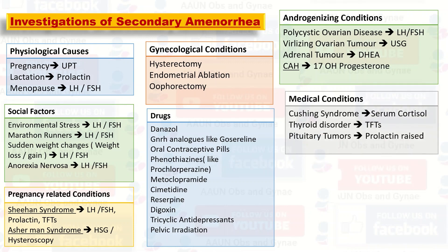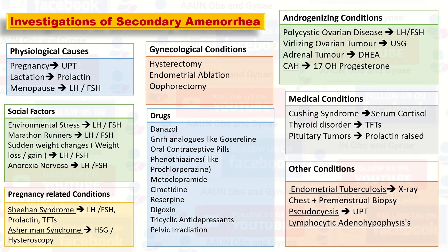Among the medical conditions: for Cushing's syndrome, we do serum cortisol. For thyroid disorders, we do TFTs. For pituitary tumor, prolactin level is raised and sometimes CT scan is done. In endometrial tuberculosis, X-ray chest plus premenstrual biopsy is done. In pseudocyesis, UPT is done. Lymphocytic adenohypophysitis is diagnosed by hormone levels.